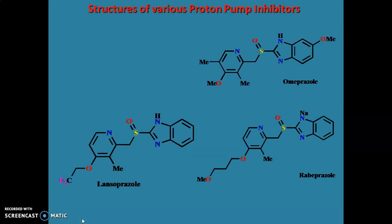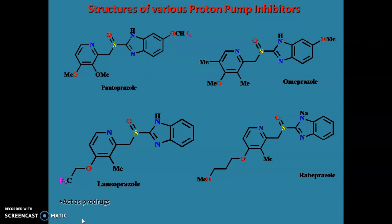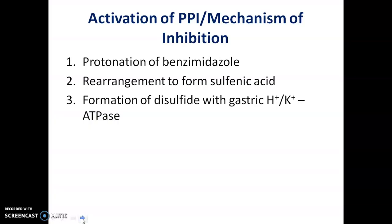The various structures of proton pump inhibitors are omeprazole, rabeprazole, lansoprazole, and pantoprazole. All these drugs act as prodrugs and they are activated by strongly acidic conditions found in the canaliculi of parietal cells. Activation involves three steps: first, protonation of the benzimidazole ring; second, rearrangement to form sulfenic acid; and third, formation of a disulfide with gastric H+/K+ ATPase.